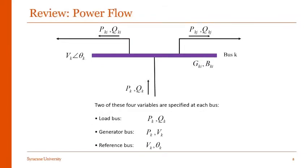This picture shows a sample bus in the power system where PK and QK represent load or generation injection at this bus, and PKI, QKI or similarly PKJ and QKJ represent the active and reactive power flow on the transmission lines associated with bus K.